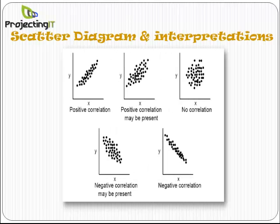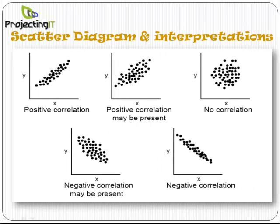This slide shows the various types of data scatter between two variables and their interpretations. Remember, a scatter diagram does not predict cause and effect relationships, but indicates a possible positive, negative, or no correlation between two variables.